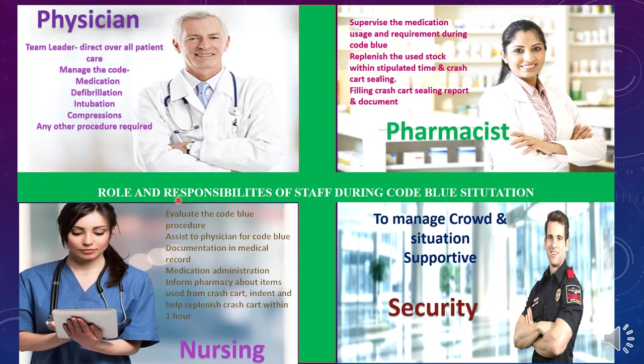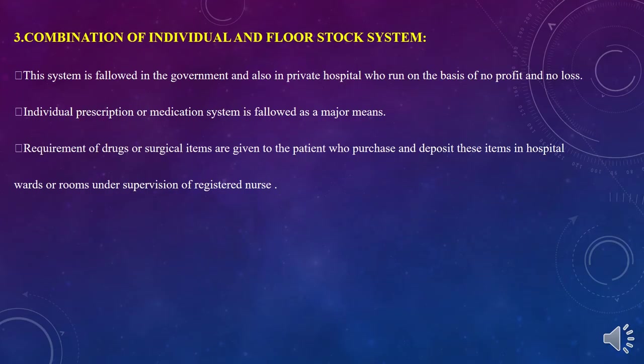The third system is the combination of individual prescription and floor stock system. This system is followed in government and private hospitals operating on a no-profit, no-loss basis. The individual prescription or medication system is the major method — drugs or surgical items are given to the patient, who purchases and deposits the items in the hospital ward or room under the supervision of a registered nurse.